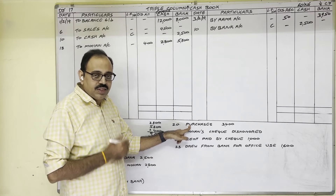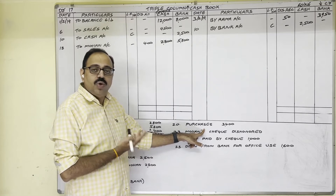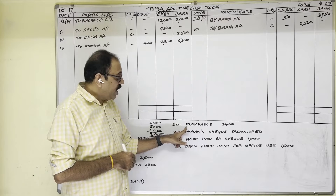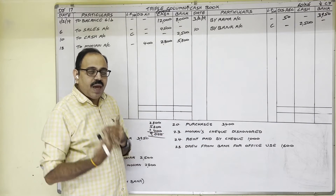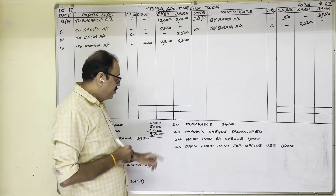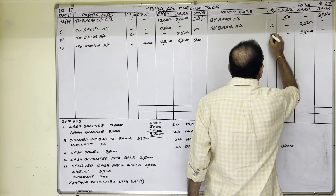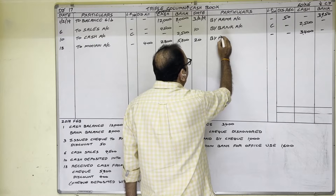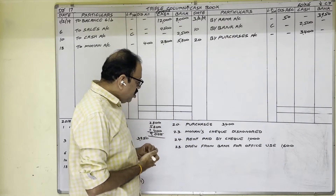20th date: purchases 3,400. Nothing is specified about the payment method, so goods are purchased for cash. Cash is going out from the firm, so write 3,400 on the credit side cash column on 20th date. In the particulars column write 'by purchases account'.